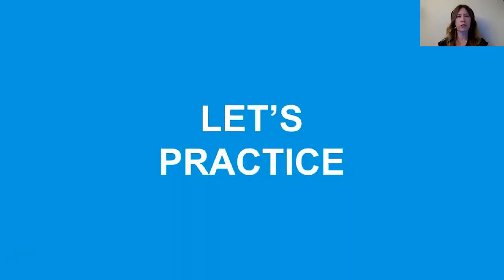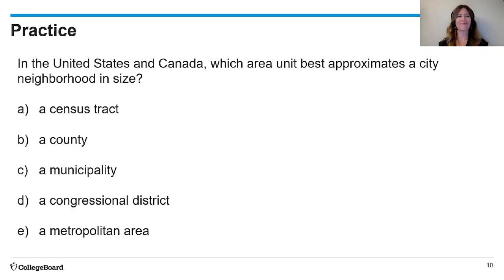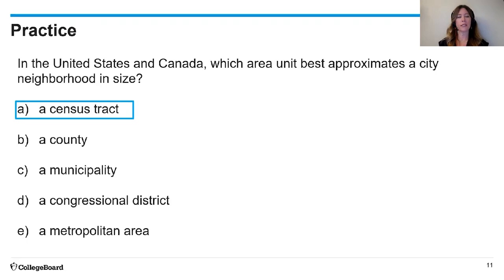Let's practice. In the United States and Canada, which area unit best approximates a city neighborhood in size? The answer is a census tract. A census tract is really the smallest unit of the census — this is your neighborhood. It's not an entire county or municipality, not a congressional district, and not a huge metropolitan area. A census tract is a unit that is just about city neighborhood size.